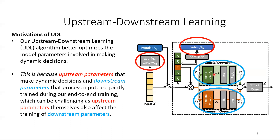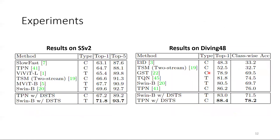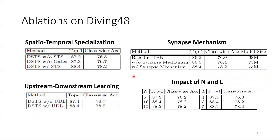I refer the audience to the paper for a more in-depth discussion. We conduct experiments on two popular datasets, the Something-Something v2 dataset and the Diving48 dataset. Our method achieves state-of-the-art performance on both of them. We also conduct ablation studies on some aspects of our design. Briefly, this shows that our gates can learn channelized architectures that are more specialised and effective for fine-grained recognition compared to other handcrafted alternatives. This shows that our dynamic synapse mechanism design performs better than alternative designs with the same number of parameters. This shows that our upstream-downstream learning algorithm is effective, and we also found that increasing our N and L hyperparameters, which represent the width and depth of our DSDS module, did not lead to further improvement beyond a certain point.